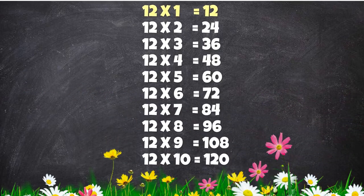Twelve ones are twelve. Twelve twos are twenty-four. Twelve threes are thirty-six.